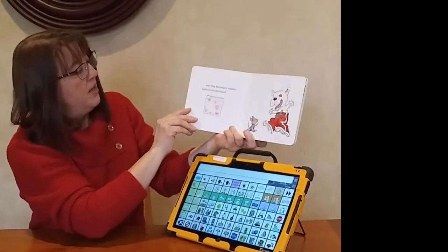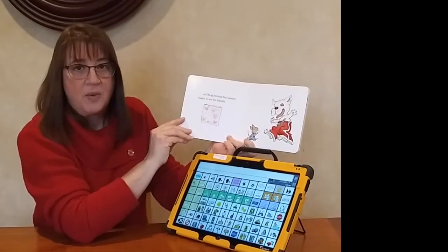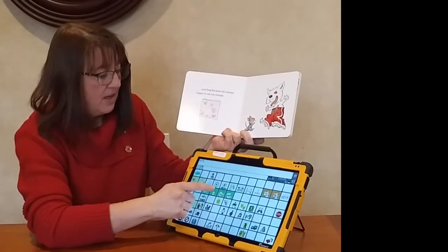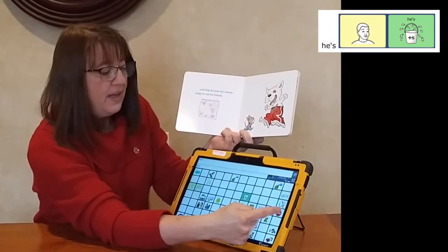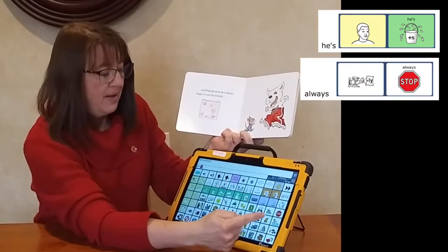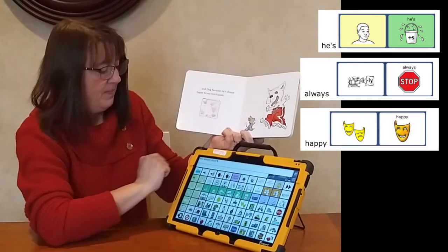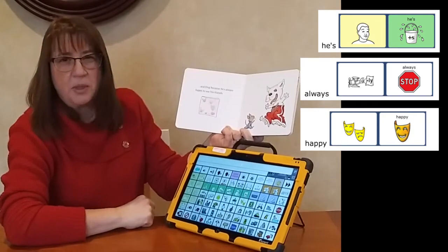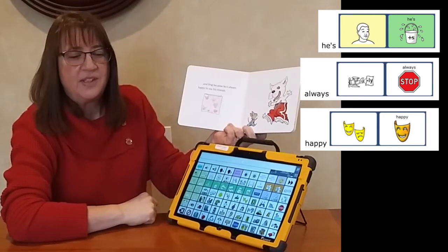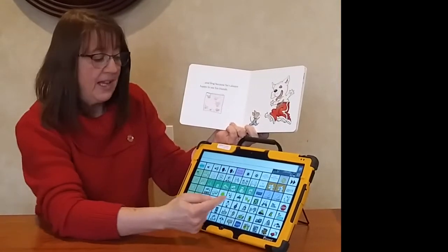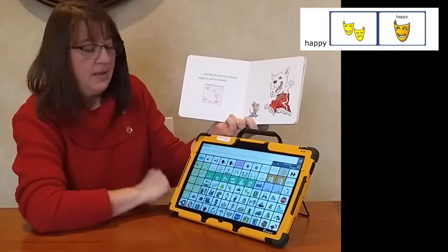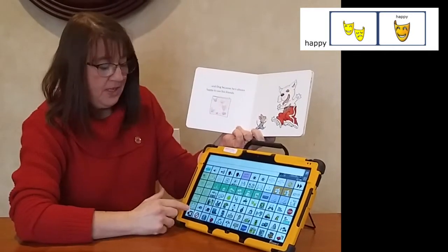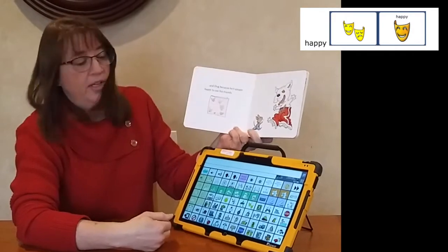And Dog, because he's always happy to see his friends. Mouse thinks he's always happy to see his friends. I think that's pretty true about dogs — they're always happy. In fact, 'happy' is a feeling word, which is a describing word. It's just said a little bit differently on our device.